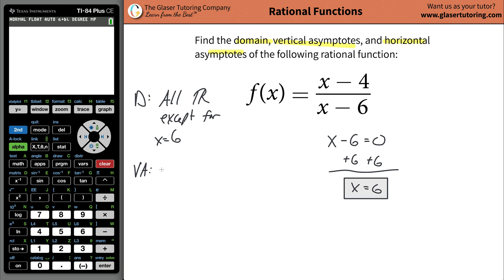Vertical asymptotes. So vertical asymptote, it's going to be x is equal to 6. And that takes care of that. Remember, all vertical lines are going to have a value x equaling a value. Now next is going to be the horizontal asymptote.